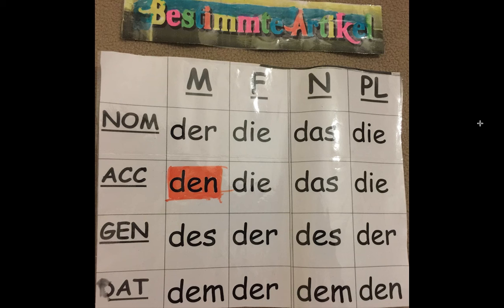You will see that den is by far the most important change for the definite article that you would need to know, especially at junior to third level. So: der Mann hat den Mantel.